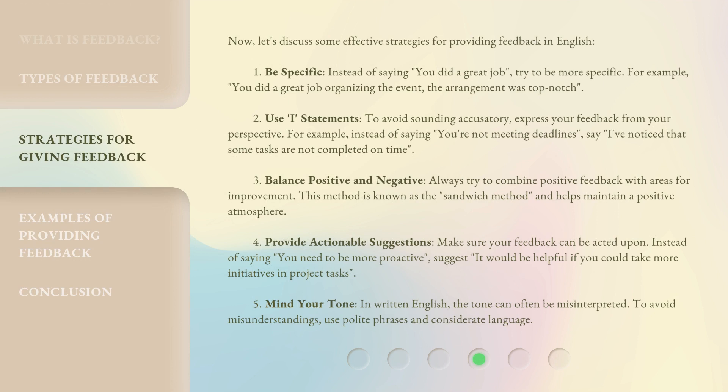Now, let's discuss some effective strategies for providing feedback in English. For example: 'You did a great job organizing the event — the arrangement was top-notch.' To avoid sounding accusatory, express your feedback from your perspective. For example, instead of saying 'You're not meeting deadlines,' say 'I've noticed that some tasks are not completed on time.'